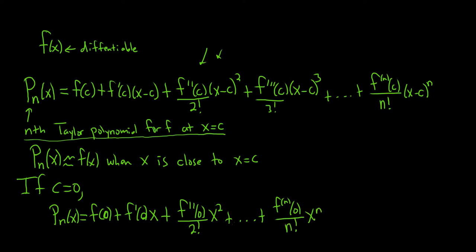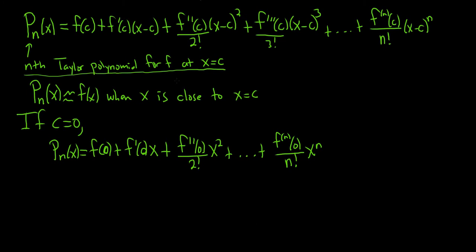And this one is special. So whenever c is equal to 0, you call it the Maclaurin polynomial. So this is the nth Maclaurin polynomial. And again, this is used for approximations. So in this case, this is approximately equal to f of x whenever x is close to 0. So the Maclaurin polynomial is the Taylor polynomial at 0. It's the same thing, except it's just a special case when it's equal to 0.